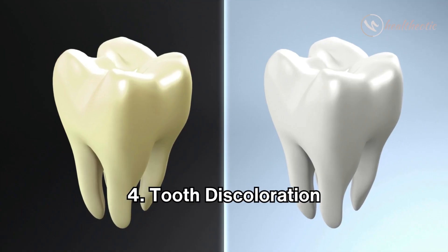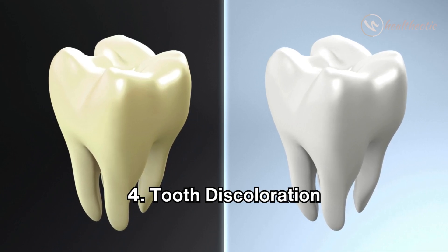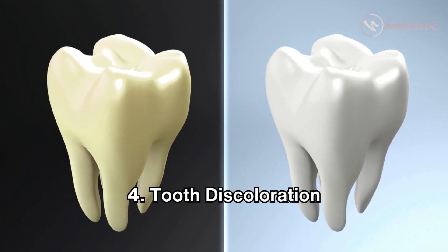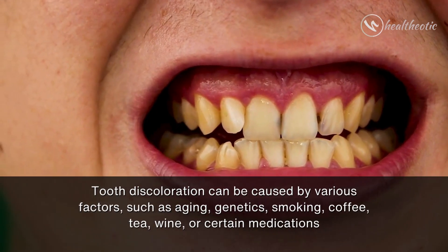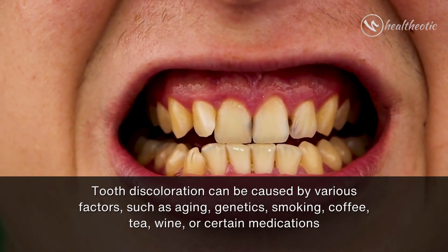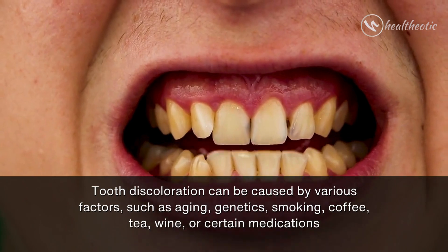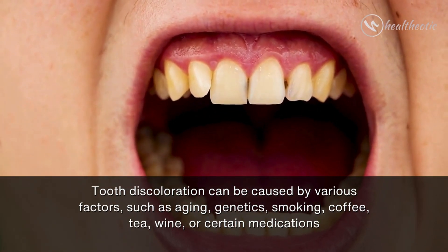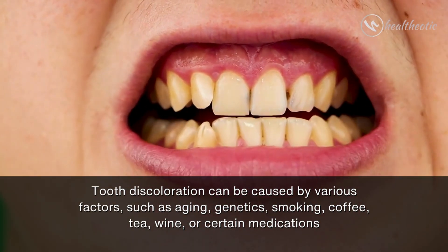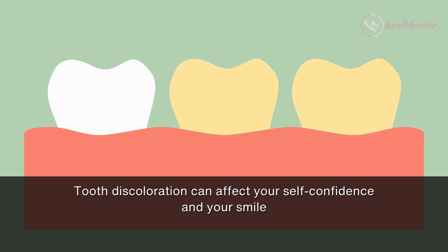The fourth common dental problem is tooth discoloration, which means that your teeth lose their natural color and become stained or yellowed. Tooth discoloration can be caused by various factors such as aging, genetics, smoking, coffee, tea, wine or certain medications. Tooth discoloration can affect your self-confidence and your smile.